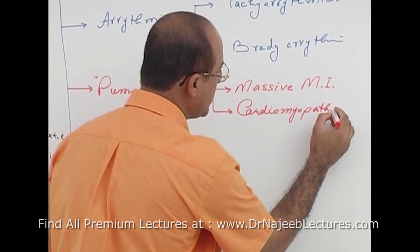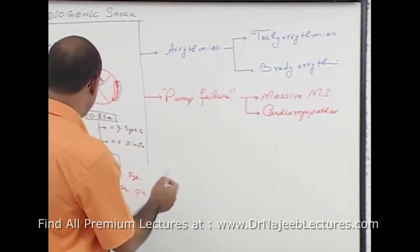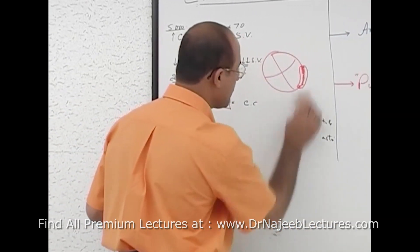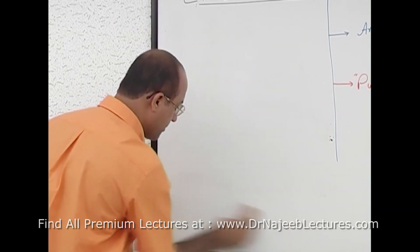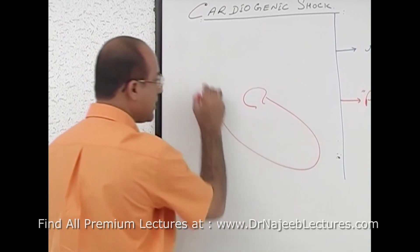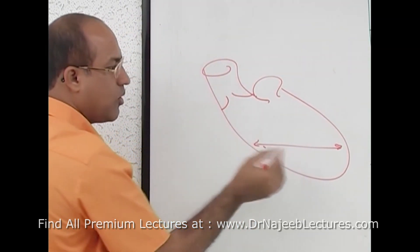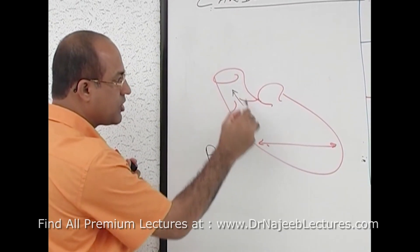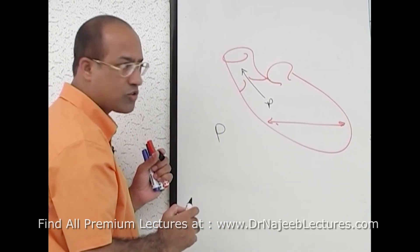For example, in dilating cardiomyopathy, the left ventricle is dangerously dilated. If the left ventricle is too much dilated, it cannot maintain cardiac output. Why? Because the pressure generated to push the blood out and produce stroke volume depends on the tension and the radius of the ventricle.